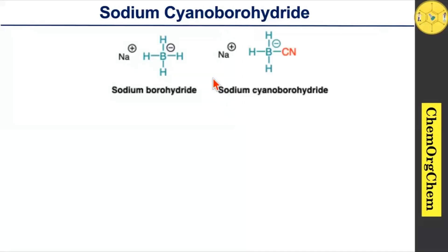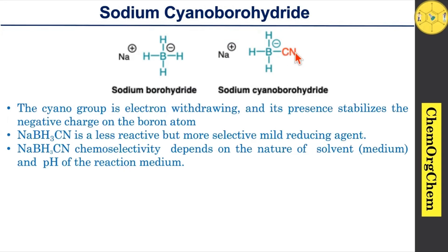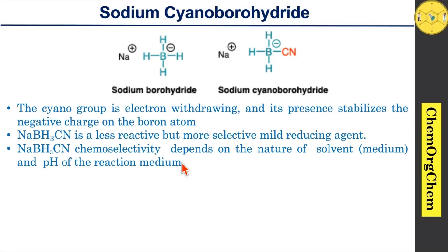Sodium cyanoborohydride is similar to sodium borohydride. Here you see the structures of sodium borohydride and sodium cyanoborohydride. In sodium cyanoborohydride, there is one cyano group, which is an electron-withdrawing group that stabilizes the negative charge on the boron atom. Because of that, sodium cyanoborohydride is less reactive compared to sodium borohydride, but a more selective and mild reducing agent, making it useful for chemoselective reductions. However, the chemoselectivity depends on the nature of the solvent and pH of the reaction medium.